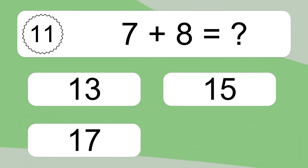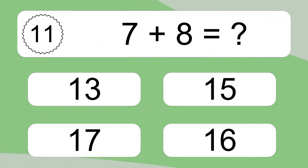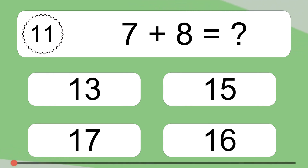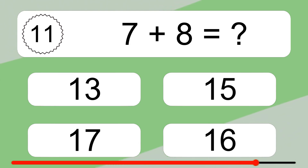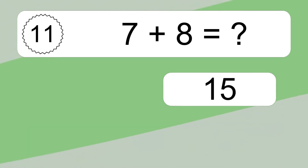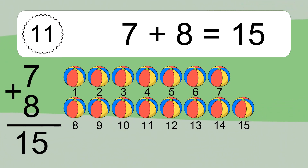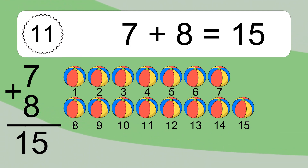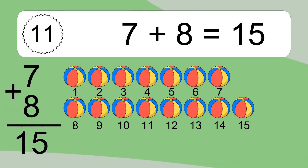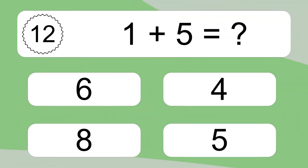7 plus 8 equals what? 7 plus 8 equals 15. Let's count it. 1, 2, 3, 4, 5, 6, 7, 8, 9, 10, 11, 12, 13, 14, 15. 1 plus 5 equals what?